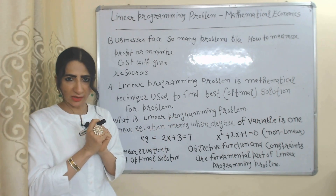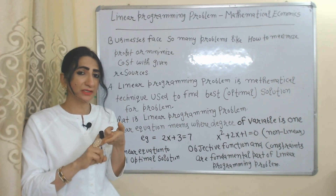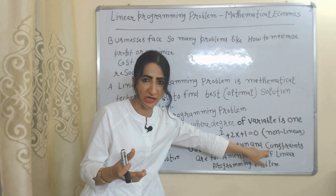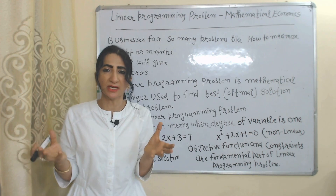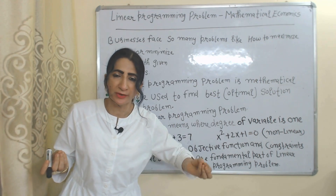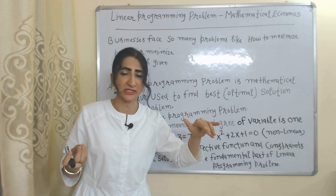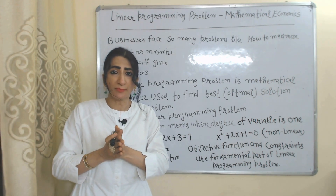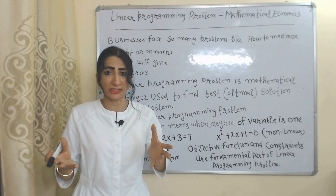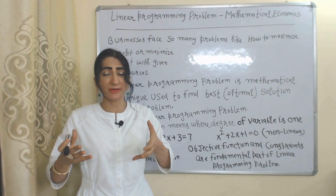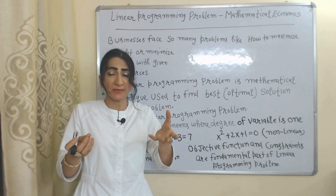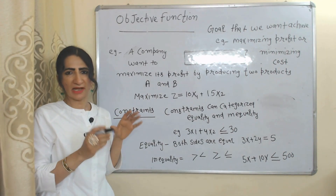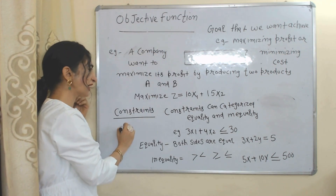There are mainly two fundamental parts of a linear programming problem. One is the objective function and the other is the constraint. Objective function means what is our main objective — we want to maximize our profit or minimize our cost. Constraint means our limitation — we have limited resources or limited production capacity. Linear programming mainly helps us achieve our objective despite our limitations.